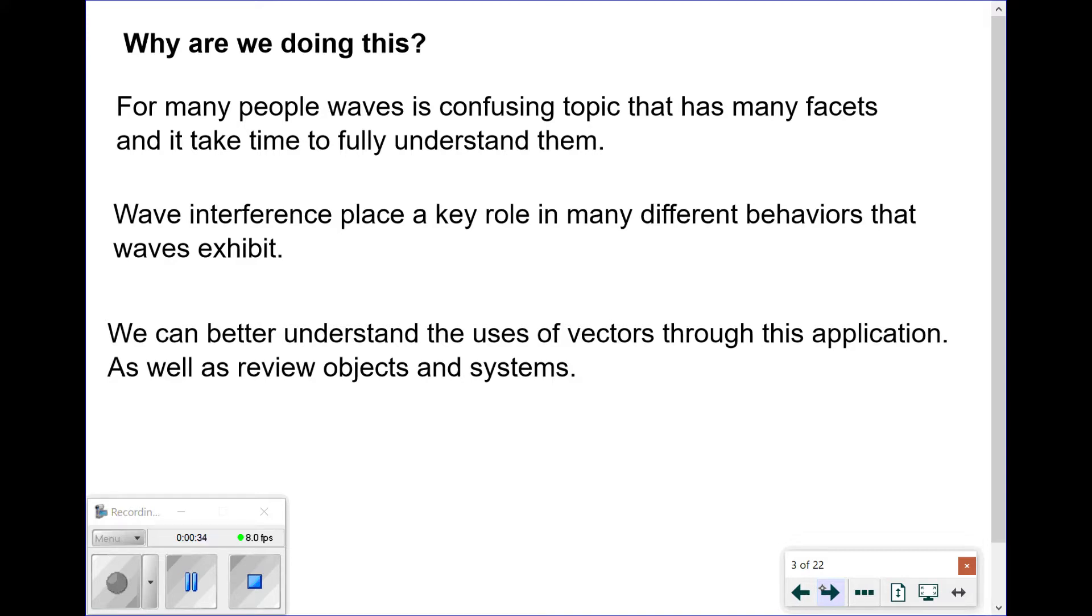Why are we doing this? Well, for starters, waves is a confusing topic for most people because they have properties that are unlike physical objects that we are used to. Understanding waves takes time. Wave interference is also a property that takes a key role in many different behaviors of waves. Also, since we'll be able to use vectors to predict what the resulting overlapping wave looks like, we're able to enhance what we know about vectors now to this application.